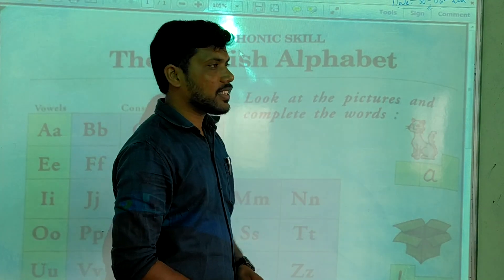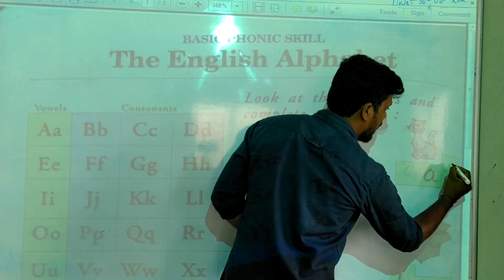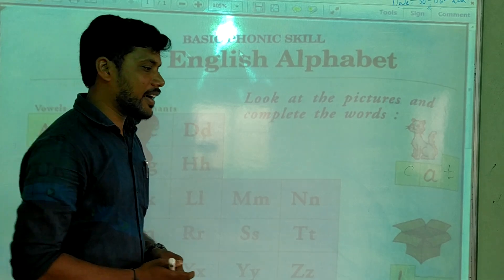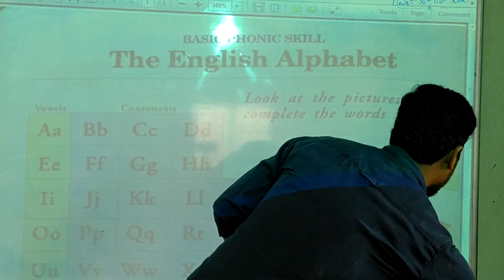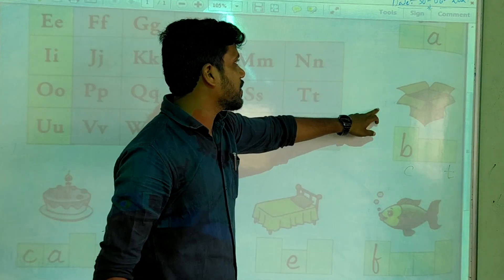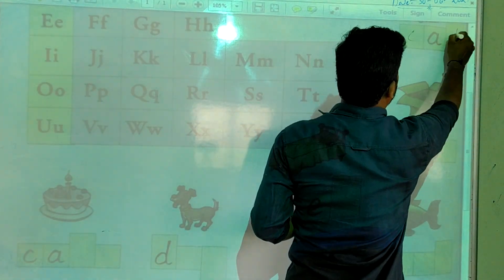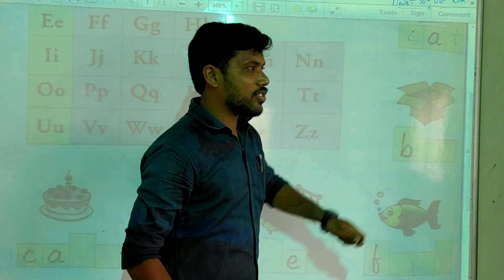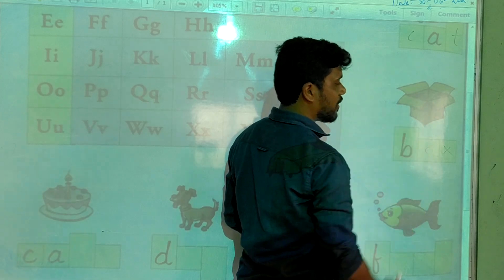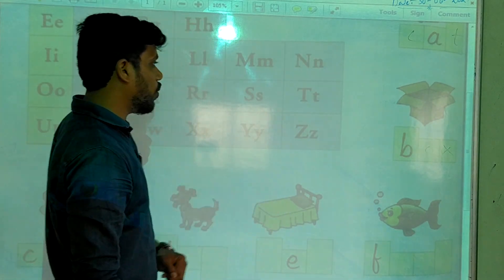This picture is cat. C-A-T. What is the spelling of cat? C-A-T. Cat. And what is this? Box. Box spelling B-O-X. What is the spelling of box? B-O-X.